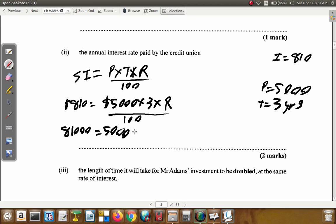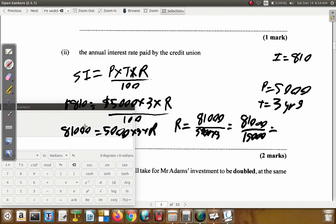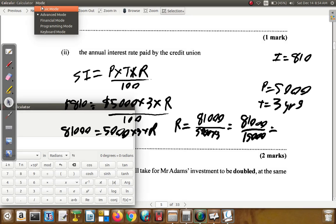Multiply $810 by a hundred. We get $81,000 equals $5,000 by three by the rate. In transposing, the rate will be $81,000 divided by $5,000 by three which is $81,000 divided by $15,000.